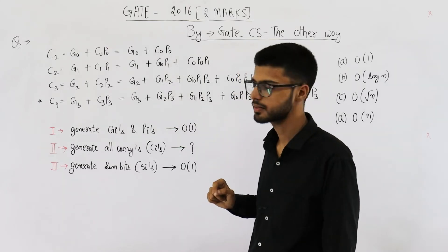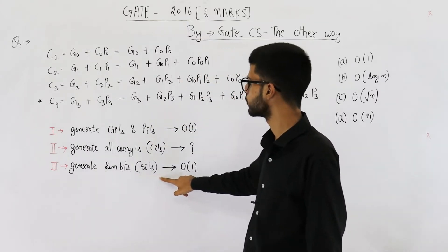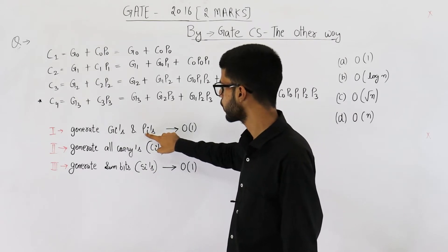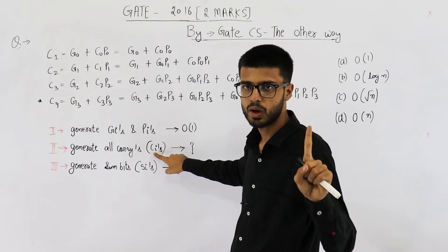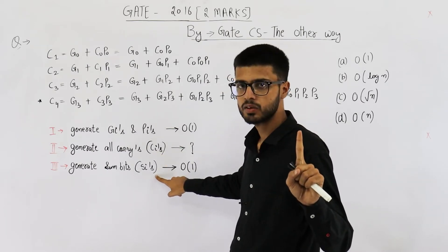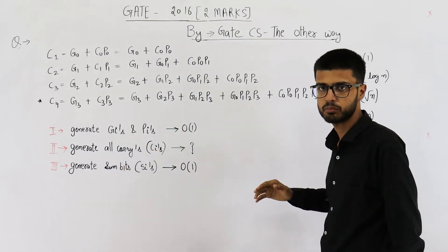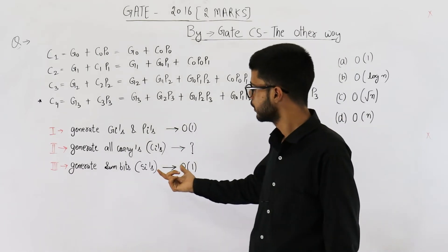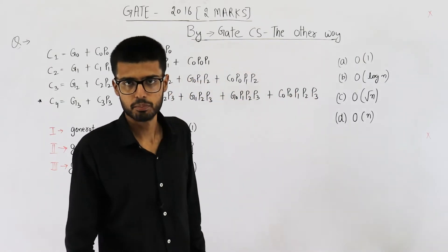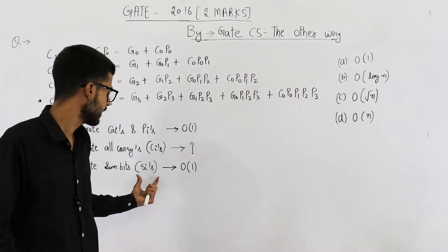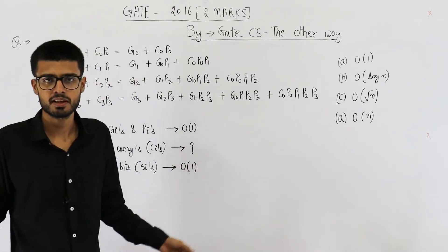Now we have all the carries and all the pi's — the propagates. We can simply calculate the sum because the formula for sum is XOR of pi and ci. One XOR gate will calculate one sum bit, which means it is a constant time operation. For all n bits, you need n XOR gates, but all of the bits will be calculated in parallel — so n XOR gates working in parallel means only one level. This is also a constant time operation.